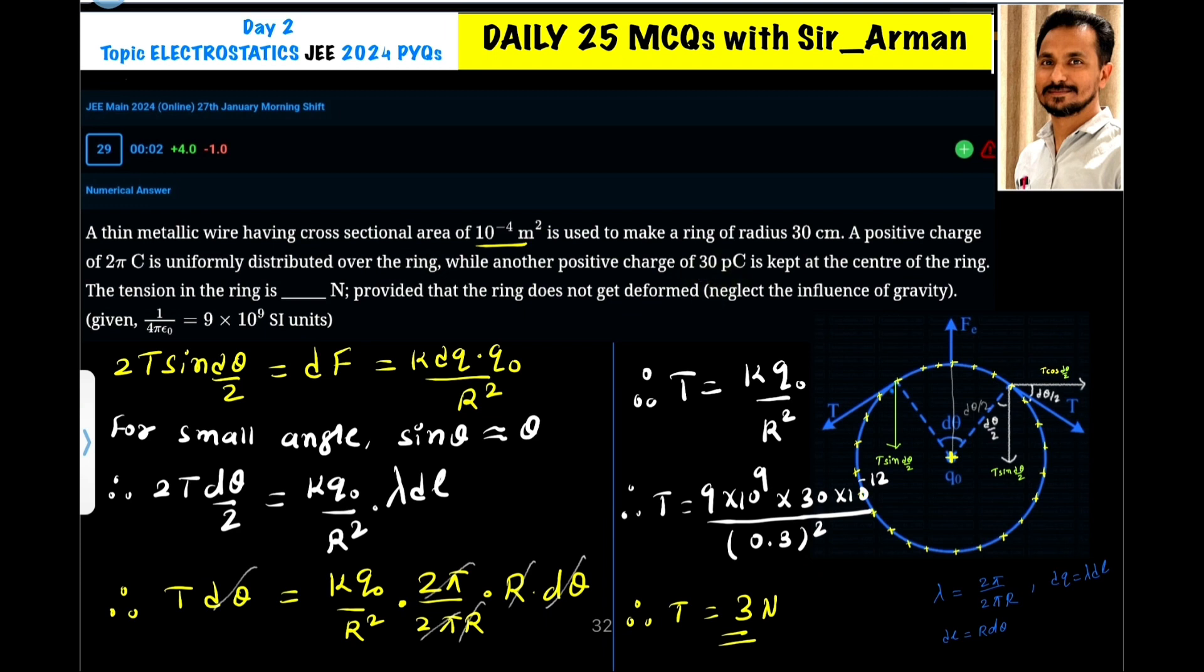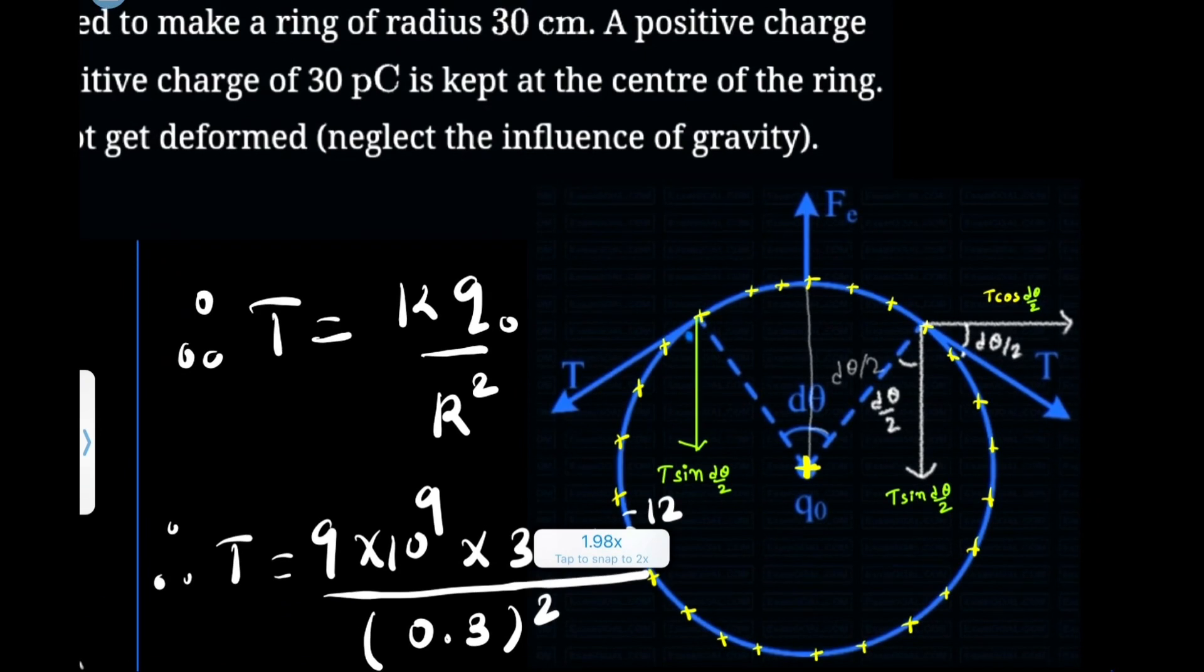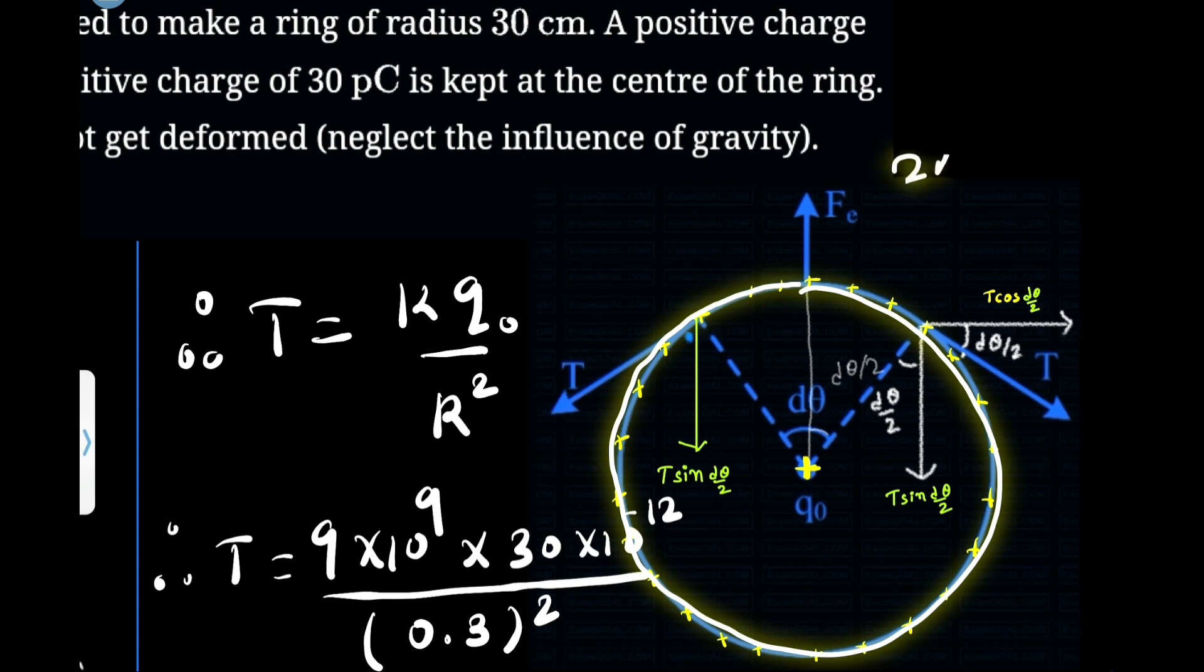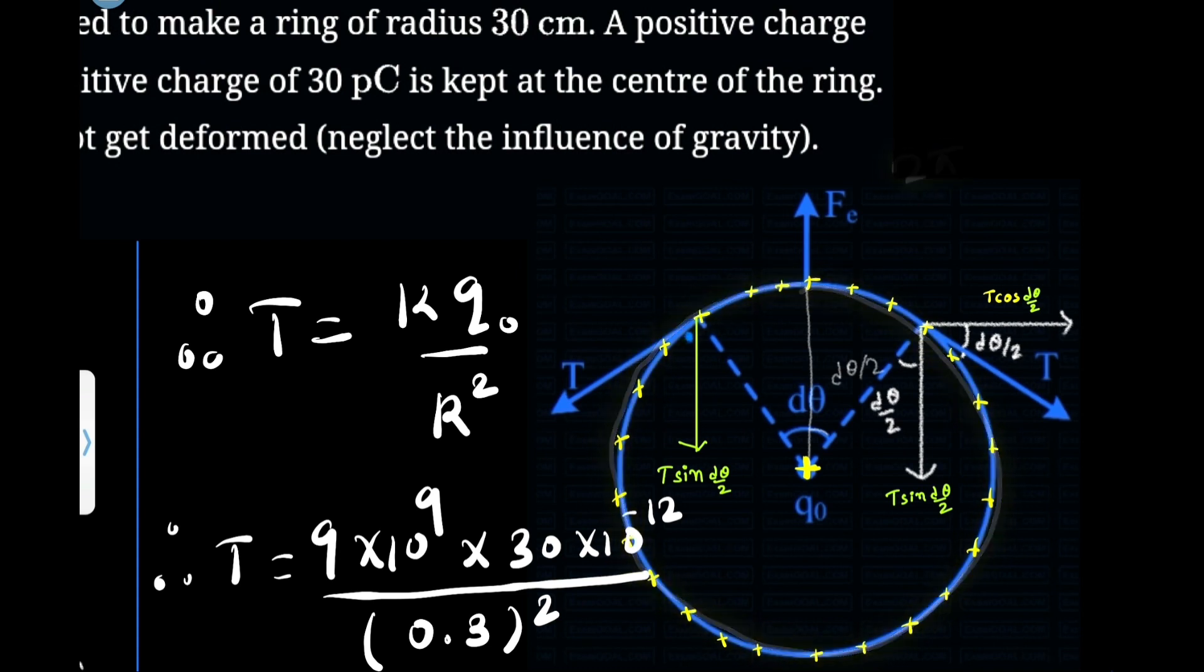The tension in the string is provided that the string does not get deformed. So what is given here? We have a ring which is charged of radius R. 2π coulomb charge is distributed - the total charge distributed is 2π coulombs. And at the center of this ring, a 30π coulomb charge is placed.